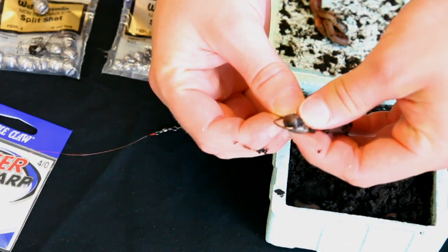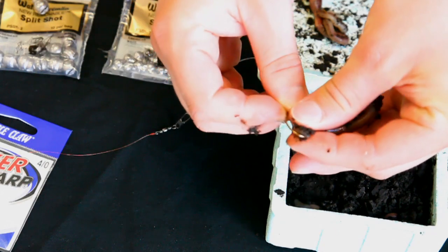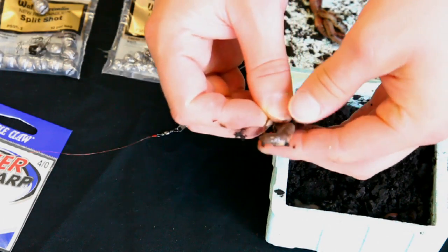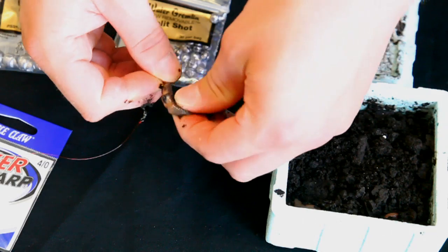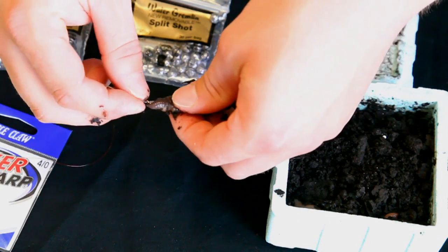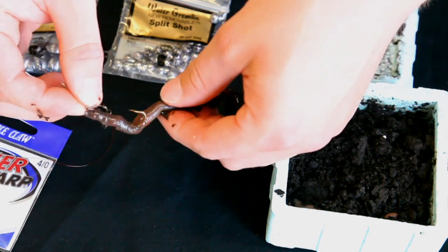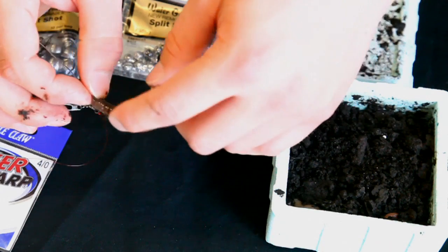Place the hook through the end of the worm, slide them on the hook about an inch, let the hook exit out of the side of the worm, push them up onto the shank, which is the long part on the back.